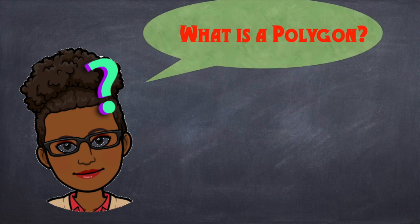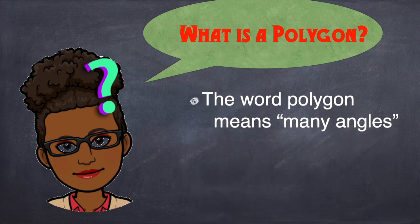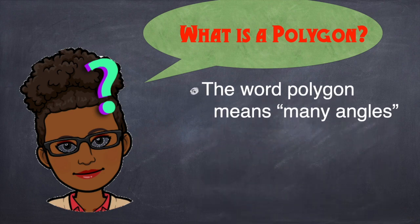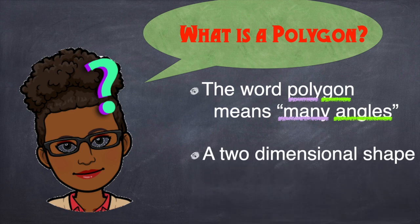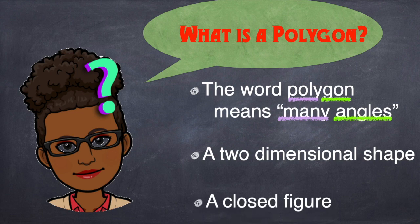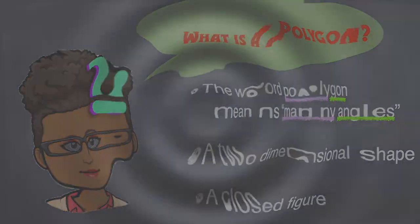Now, I know some of you are wondering what is a polygon? Well, the word polygon means many angles. Poly means many and gon means angles. Many angles. A polygon is also a two-dimensional shape. In geometry, a two-dimensional shape can be defined as a flat, plain figure or a shape that has two dimensions: length and width. A polygon is also a closed figure. This means that all the lines connect. Let's look a little more into polygons.